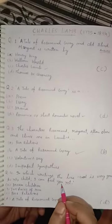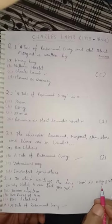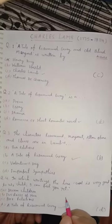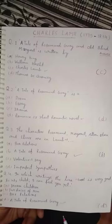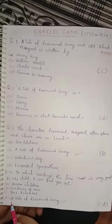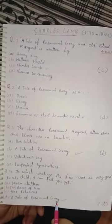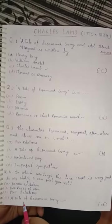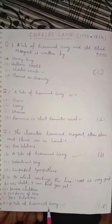Question 4. In which writing does the line 'God is very good to us, child, I can feel you yet' occur? This line is from one of Charles Lamb's works. Option D is correct — 'A Tale of Rosamund Gray.' It's a romance. These lines occur in 'A Tale of Rosamund Gray.'